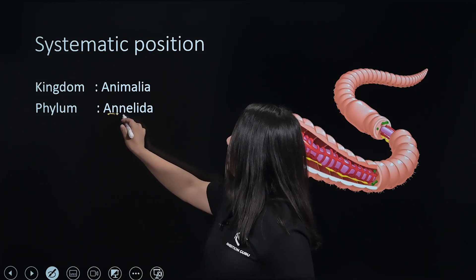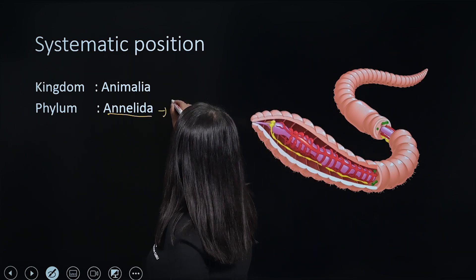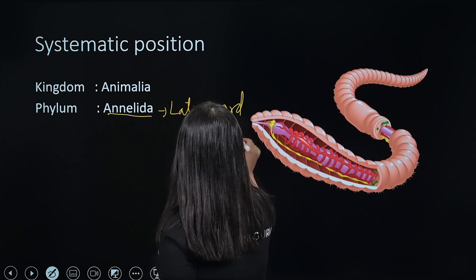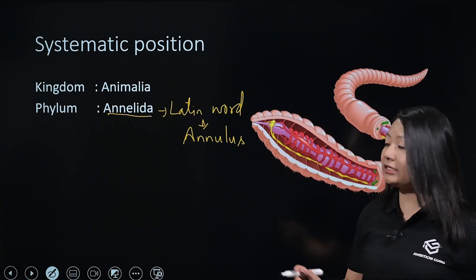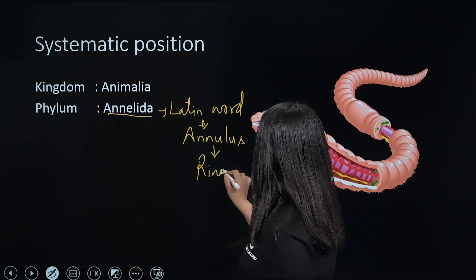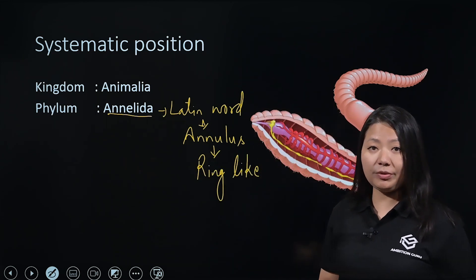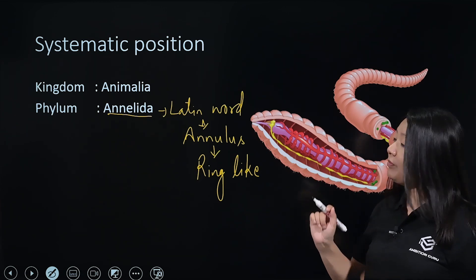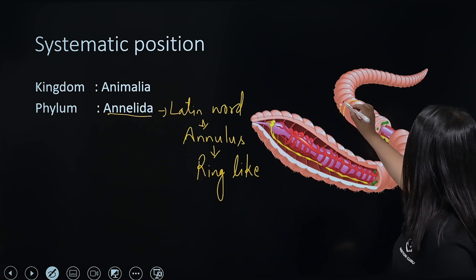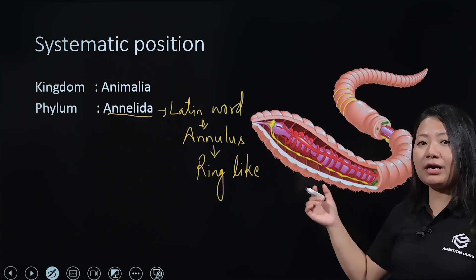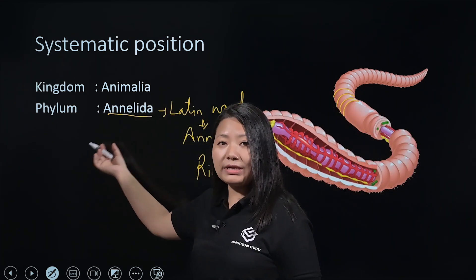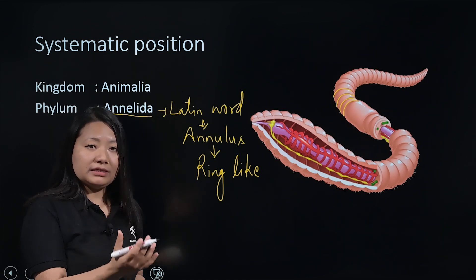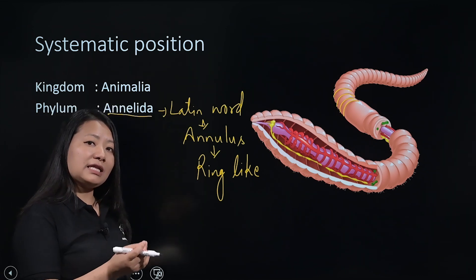Why is this term Annelida? Annelida comes from the Latin word 'annulus,' which means ring-like. If you look at the external structure of the earthworm, you can see ring-like structures. That line is called annulus. Because this ring-like structure — annulus — is present, the phylum is called Annelida. The earthworm has this same ring-like structure.